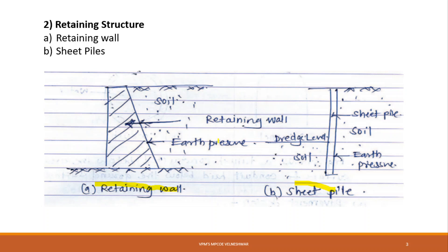The retaining structure may be a rigid retaining wall or a sheet pile. In sheet pile, soil mass is present on both sides. There is a dredge level, and to avoid the spilling or spreading of the soil, we provide the sheet pile. When we know the earth pressure from the soil on the sheet pile, we can then design the sheet pile. This is also one important scope of soil engineering.